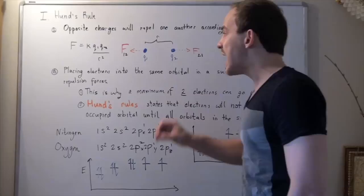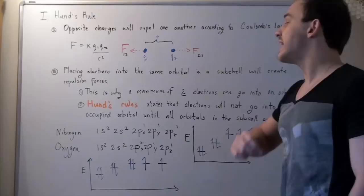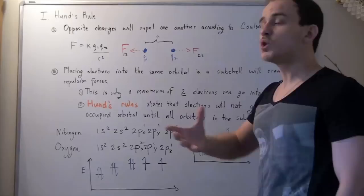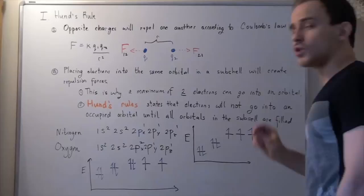And that means this idea explains the Pauli exclusion principle, which states that a maximum of two electrons can be placed into any given orbital. Now, this principle also explains Hund's rule.